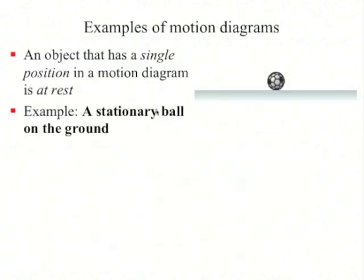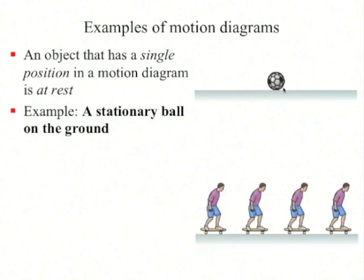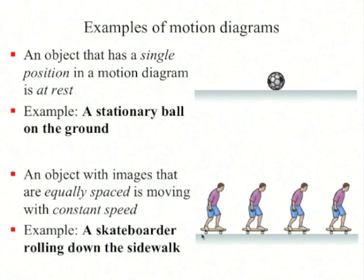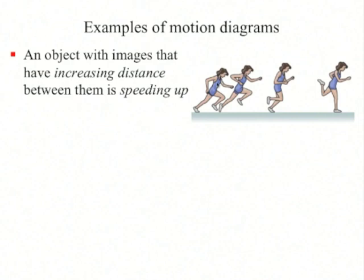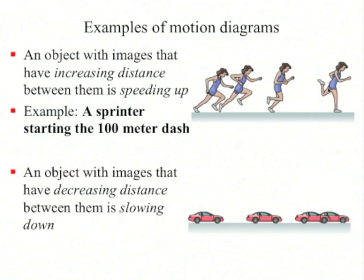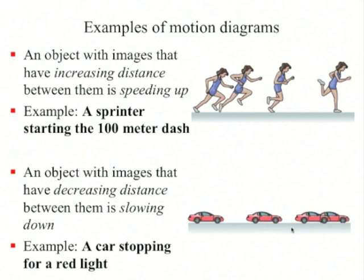Some examples: an object that has a single position in a motion diagram must be at rest, such as this soccer ball sitting on the ground. An object with equally spaced images is moving at a constant speed. An object with increasing distance between images must be speeding up, such as a sprinter starting a 100-meter dash. An object with decreasing distance between images must be slowing down, such as a car slowing down at a red light.